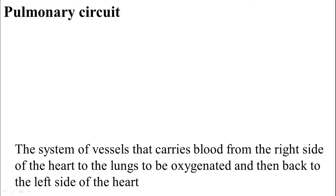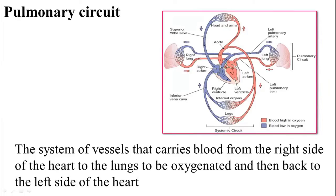Pulmonary circuits. A circuit means the system of vessels. In the body we have the systemic circuit and the pulmonary circuit. The pulmonary circuit consists of both lungs — the right lung and the left lung — and the network of cavities and vessels. The pulmonary circuit consists of vessels that carry blood from the right side of the heart to the lungs to be oxygenated, and then back to the left side of the heart.